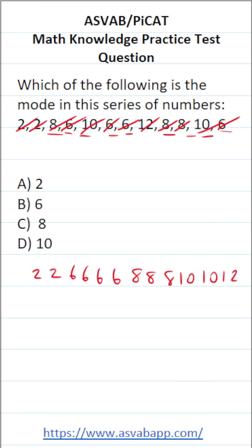So which number appears the most frequently in this data set? Well, 2 appears twice, 6 appears 4 times, 8 appears 3 times, 10 appears twice, and 12 appears once. So this one is going to be 6b.